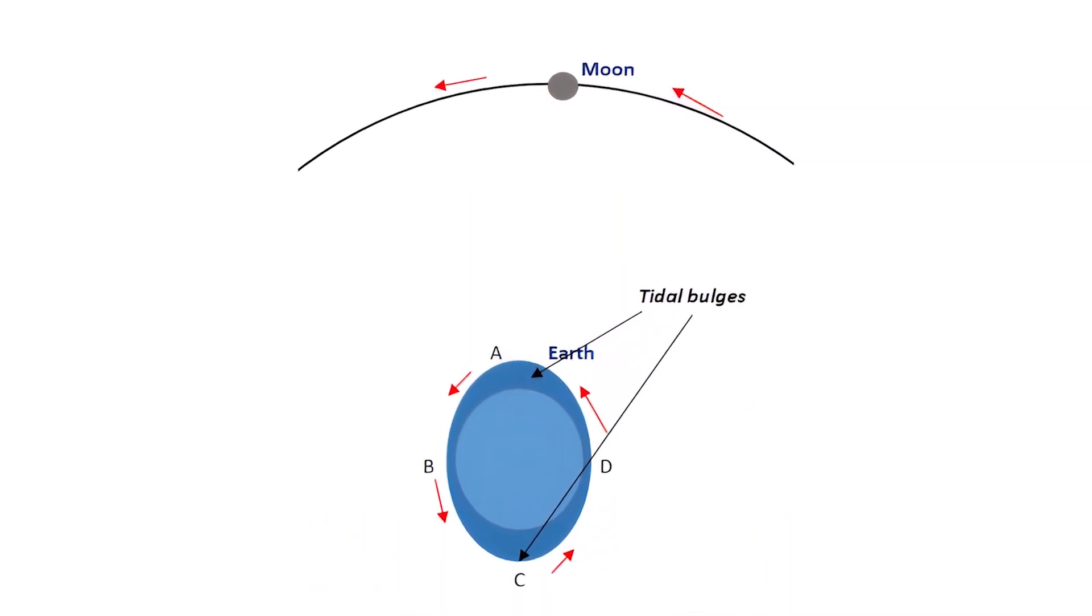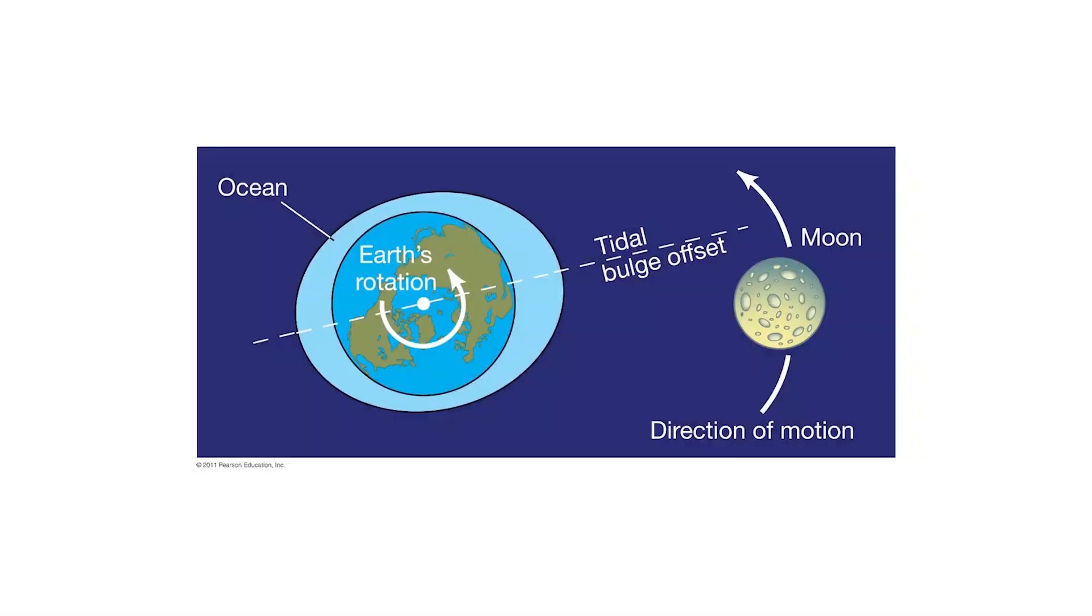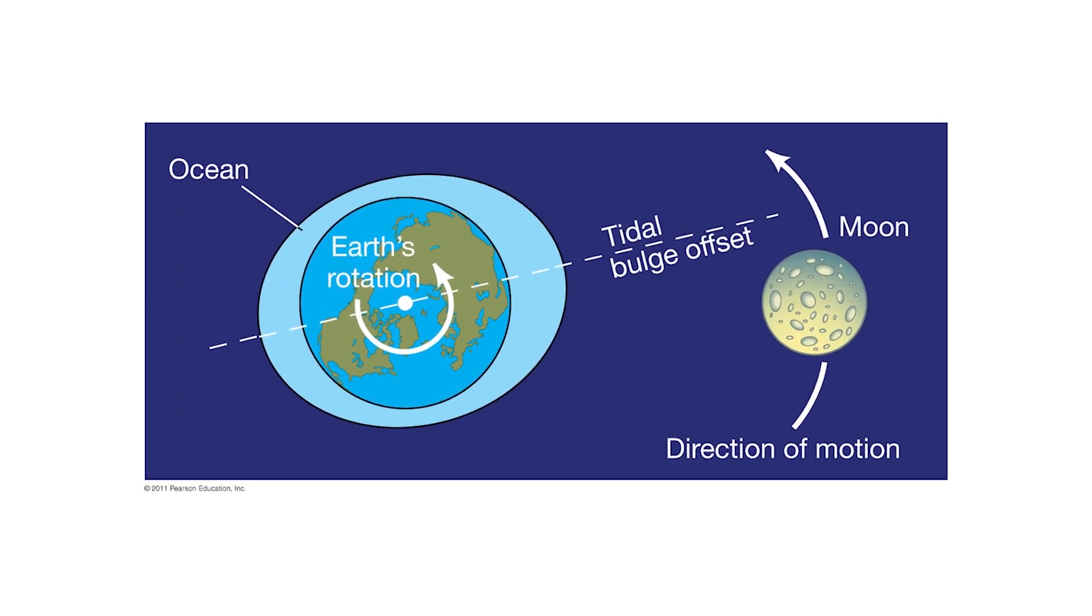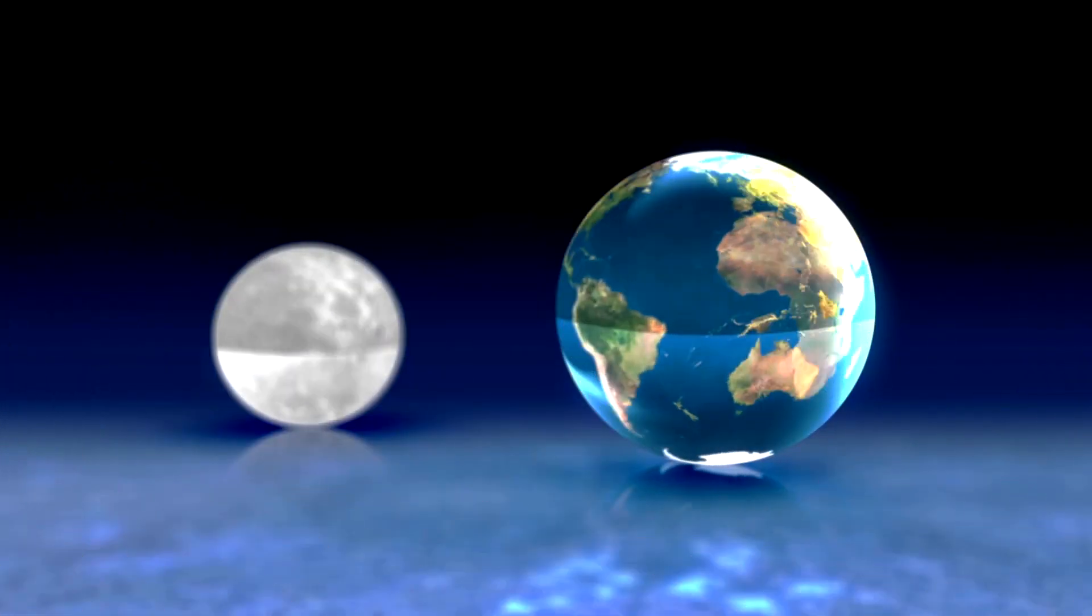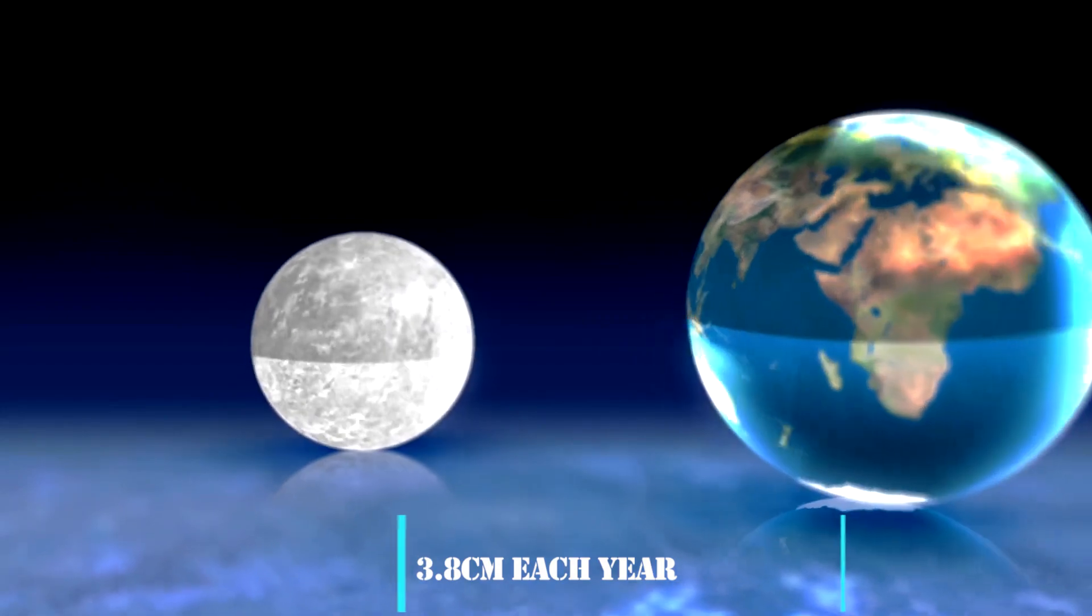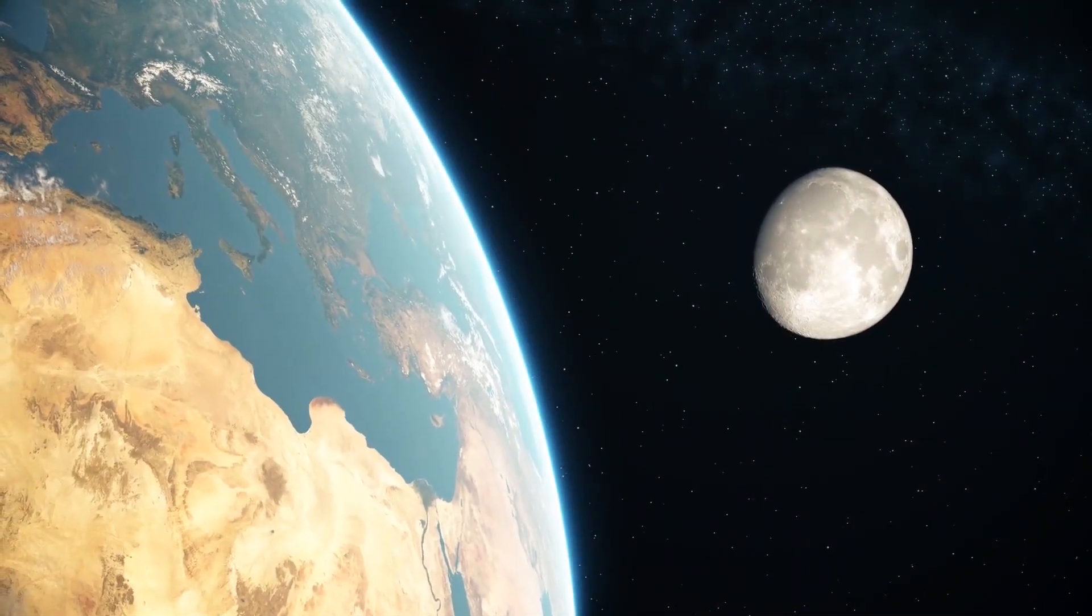The energy from this tug is transferred to the moon and slows Earth's rotation. As a result, the moon travels ethereally across space at a rate of 3.8 centimeters each year, gradually separating itself from us. Number 9.